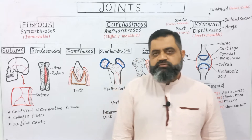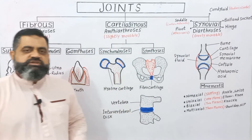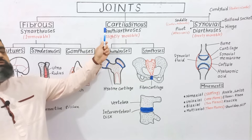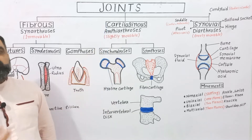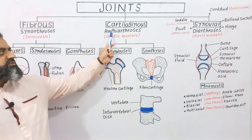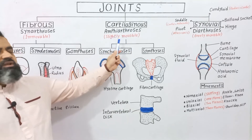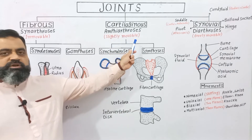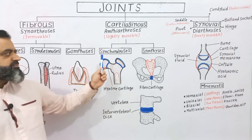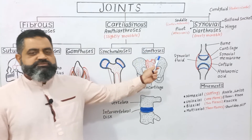The second type of joints are cartilaginous joints. Cartilaginous joints are made up of cartilage and are known as amphiarthrosis — they are slightly movable. These are of two types: synchondrosis and symphysis.